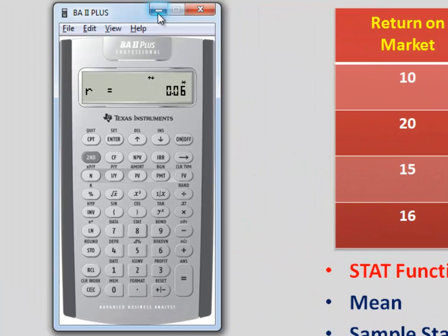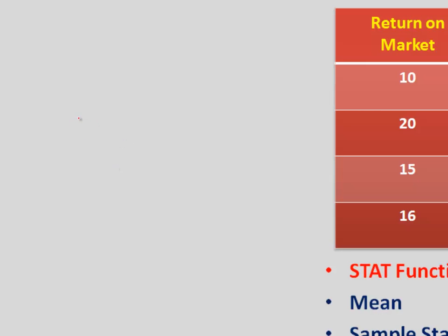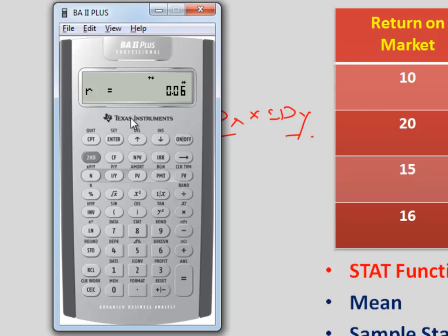now what we know is that covariance is calculated as correlation into standard deviation of X into standard deviation of Y so in this case we can simply use these three variables and calculate the covariance of this data set